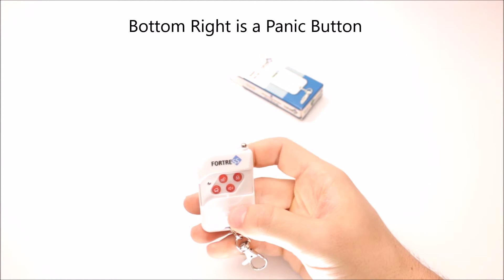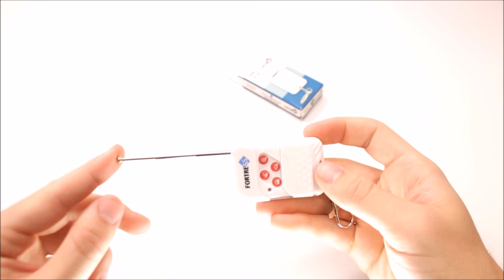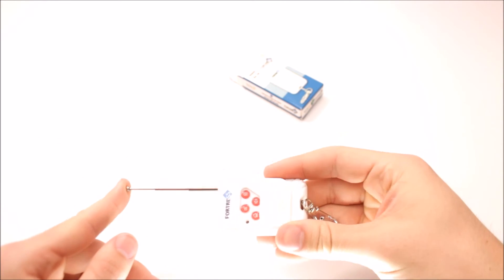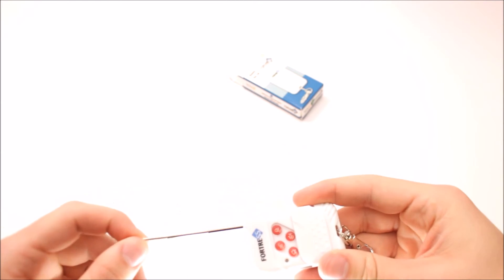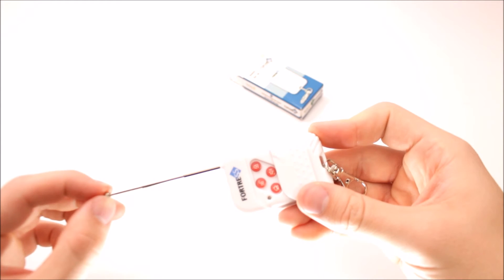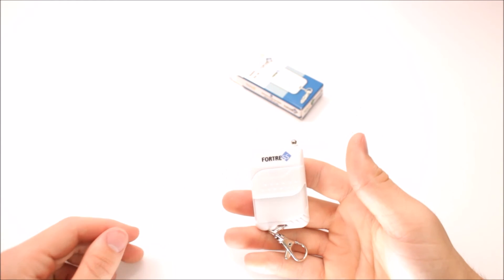Bottom right, panic button. And now you'll notice here on the top, there's an antenna. You don't have to extend that for the remote to work. If you need to get a little bit boosted range, feel free to pull it out. You shouldn't have to do that at all. Like I said, around 250 feet with these guys, no problem.